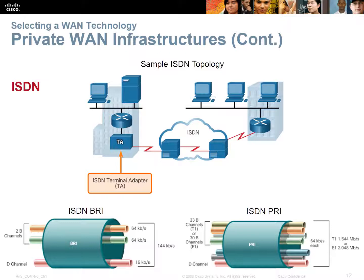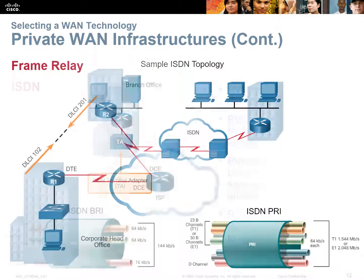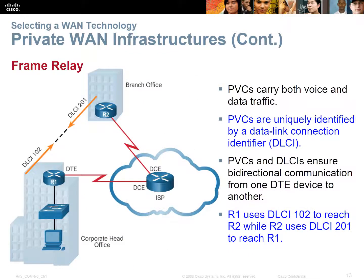Frame Relay is a wonderful protocol. In CCNA version 5 there was a whole chapter on it, but now it's far less popular because broadband and Metro Ethernet are far more cost effective, so Frame Relay is being phased out. It uses a permanent virtual circuit — inside the ISP cloud all the redundancy is taken care of, and between Router 1 and Router 2 we just have, as far as we're concerned, a permanent virtual connection. Any problems inside the ISP, the traffic is rerouted — we don't care, we've got our own private little channel.